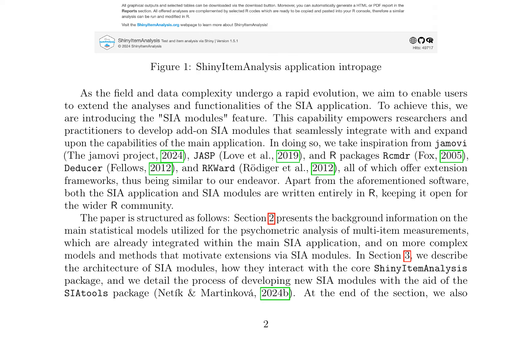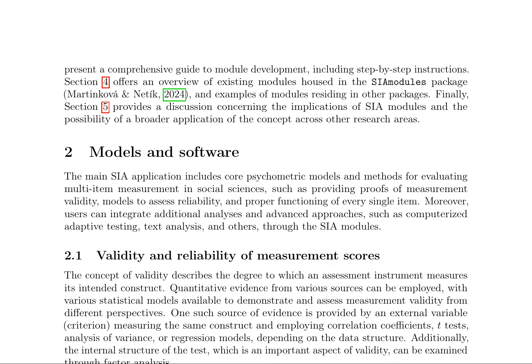The SIA modules are designed to integrate with the existing SIA infrastructure, leveraging the existing infrastructure for tasks such as data uploading and processing. The SIA application provides a comprehensive framework for multi-item measurement in social sciences, encompassing core psychometric models and methods for evaluating measurement validity and reliability. The application allows users to integrate additional analyses and advanced approaches through SIA modules.